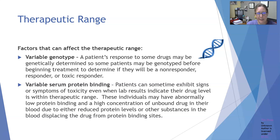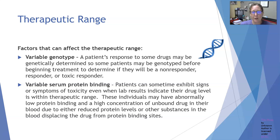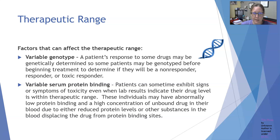Variable genotypes: there is now genomic testing available, and a patient's response to some drugs can be genetically determined. Some patients can be genotyped before beginning treatment to determine if they would be a non-responder, a responder, or a toxic responder. One practical application has been in warfarin (Coumadin) therapy. The medical world is working on increasing the availability of these tests for personalized medicine to find the right medications for patients according to their genotype.